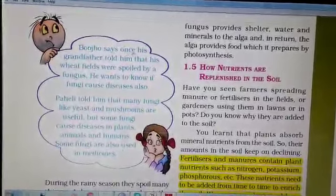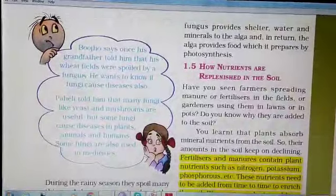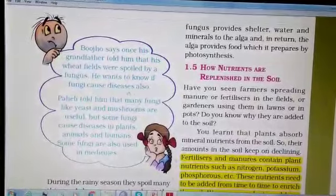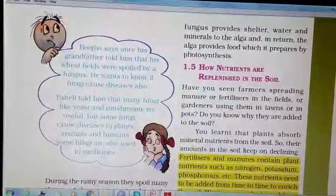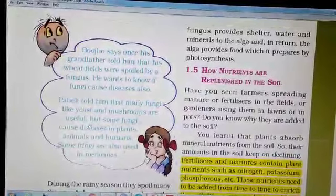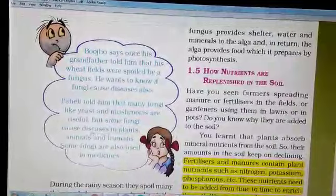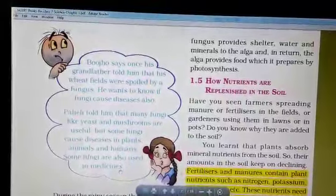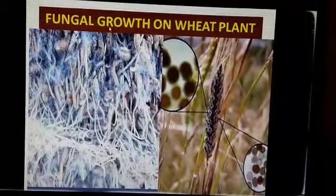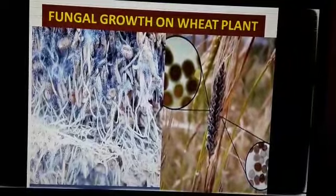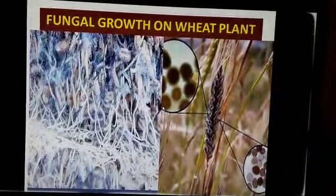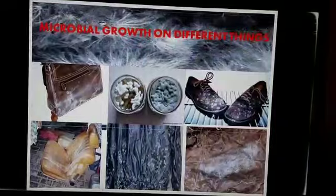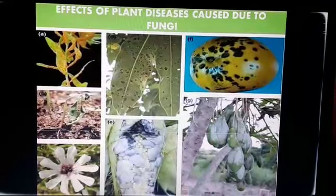Bujo mentions that his grandfather's wheat fields were spoiled by a fungus and wants to know if fungi cause diseases. Paili tells him that many fungi like yeast and mushroom are useful, but some fungi cause diseases in plants, animals, and humans. Some fungi are also used in medicine. You can see here fungal growth completely covering a wheat plant — this infection can kill the whole crop.